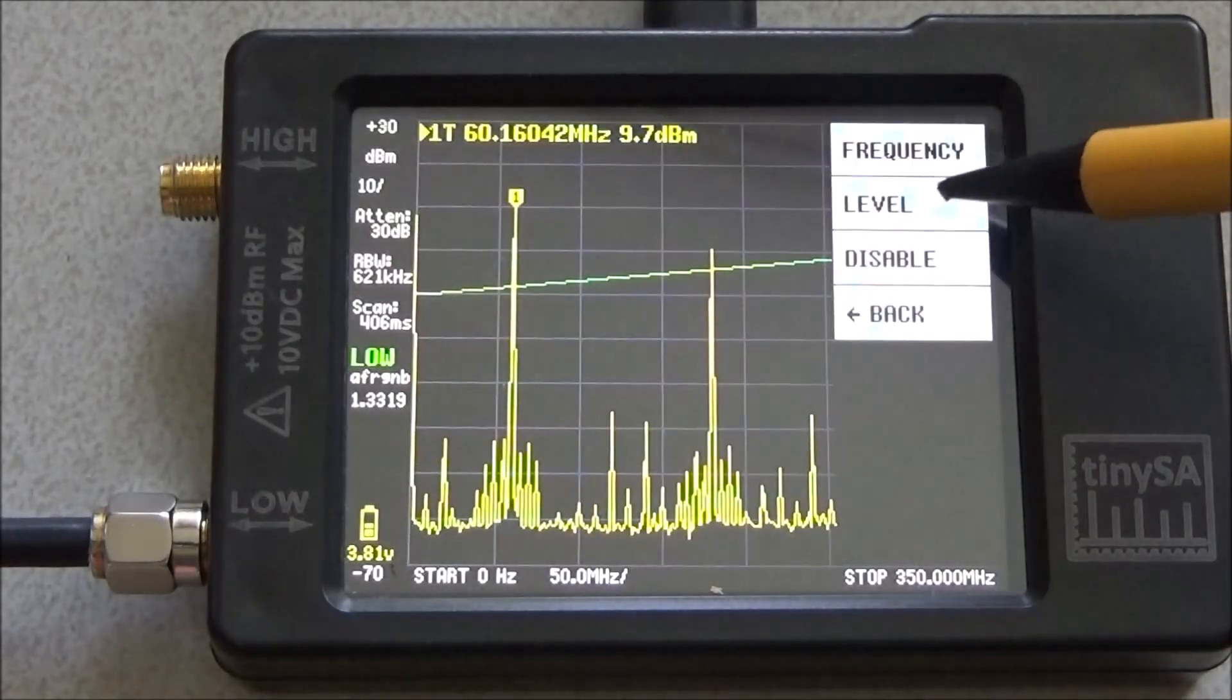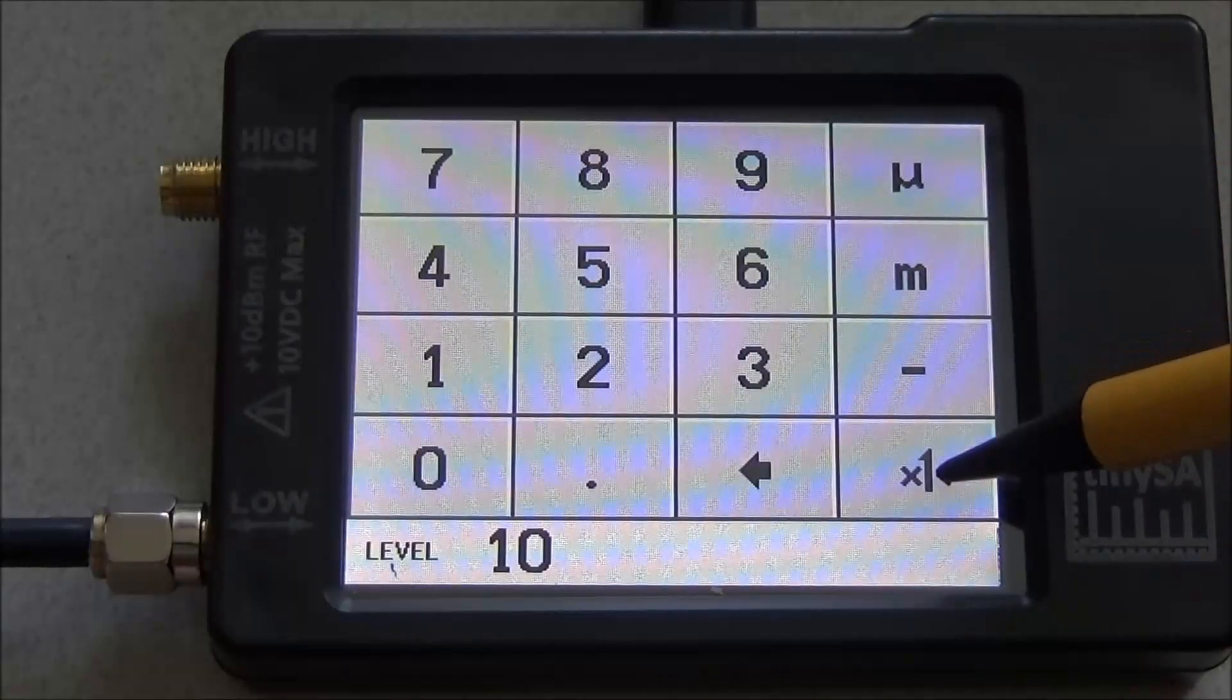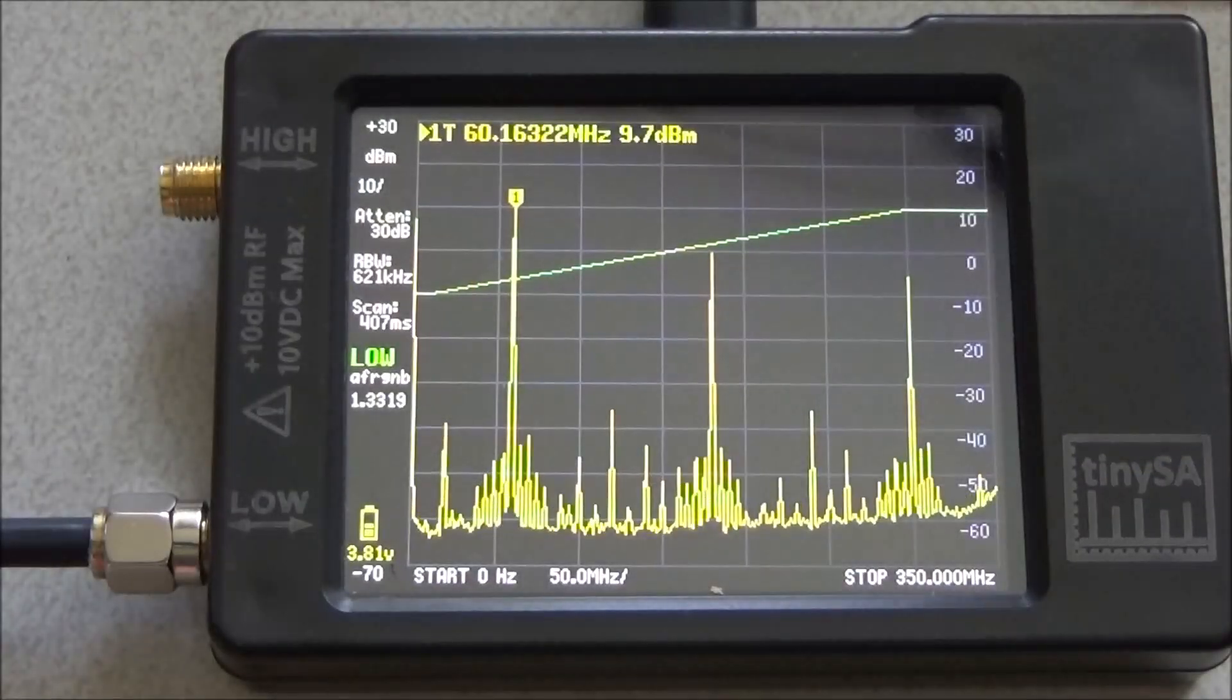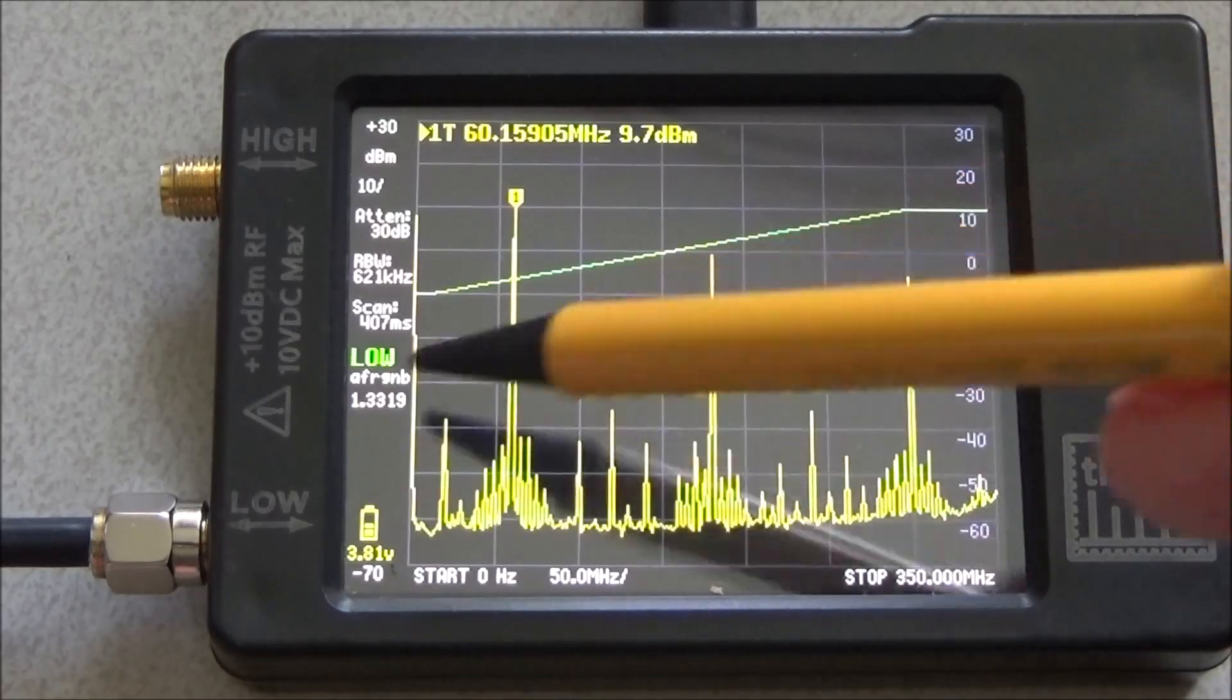The level, set the level to plus 10. And with that you can use traces to draw lines on the screen.